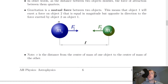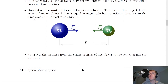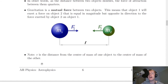Gravitation is a mutual force between two objects. This means that object 1 will exert a force on object 2 that is equal in magnitude but opposite in direction to the force exerted by object 2 on object 1. So you have force F1 acting onto mass M2 and force F2 acting onto mass M1. Notice that R is the distance from the centre of mass of one object to the centre of mass of the other, so it's important to use centre of masses in calculations.